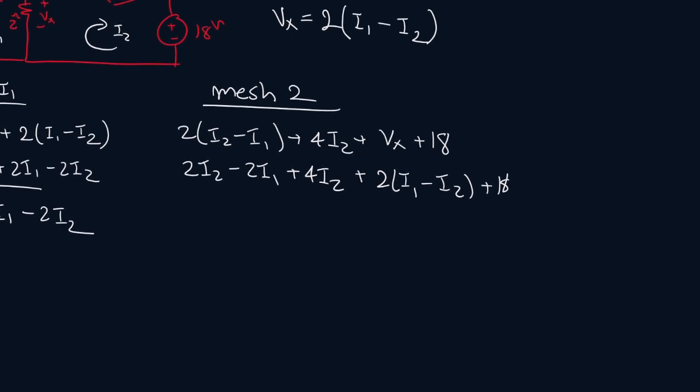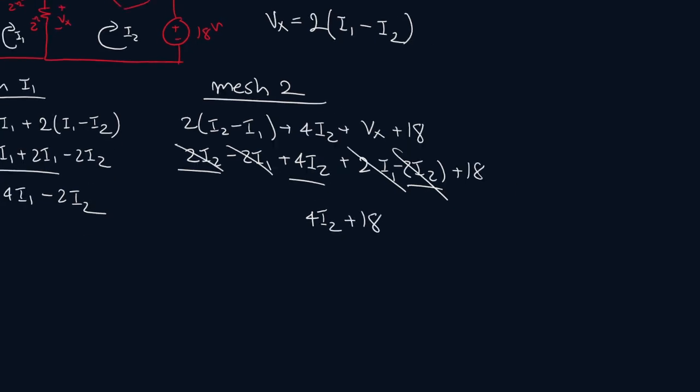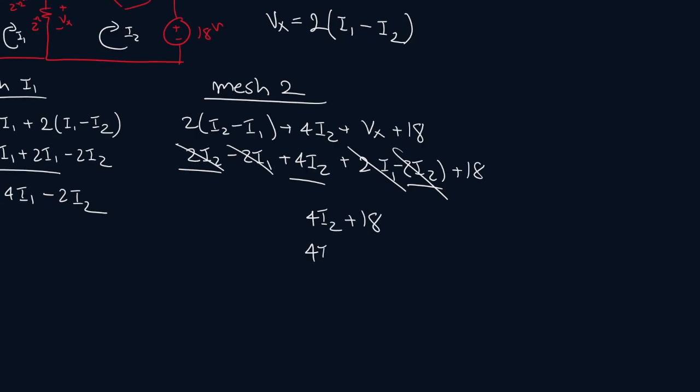So distribute the 2 in. We actually get this. And then let's collect like terms. So this and this cancels out. So we just have 4 I2. Then we see this and this cancels out. So we just have the following. So 4 I2 equals minus 18. So I2 will be equal to minus 4.5.